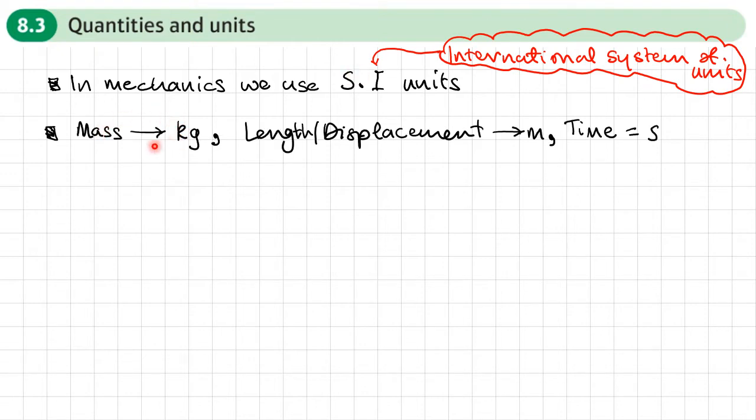So for mass, we always want to be using kilograms or convert to kilograms. For length or displacement, we use meters, so we convert to meters. And for time, we always work in seconds. So if we have any other unit like hours or minutes, we will convert them to seconds.